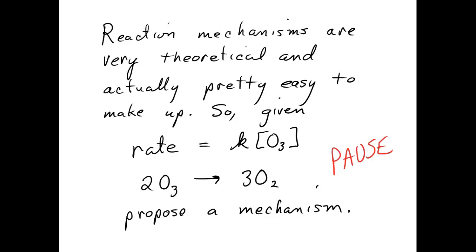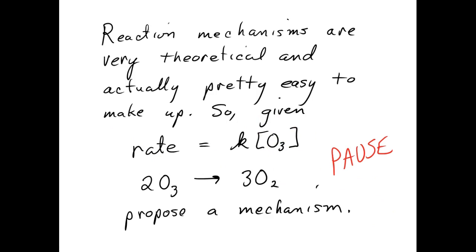Reaction mechanisms are theoretical, and it's pretty easy to make them up. If you know the empirical rate law and you know the overall stoichiometry of the reaction, you can make up a mechanism. Why don't you try proposing a mechanism for this reaction? Remember, your steps have to add up to the overall equation. Your slow step has to match the rate law, and your other steps can vary from person to person. Give it a try and go on when you're ready.